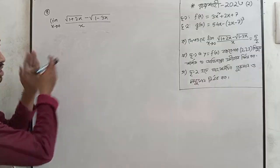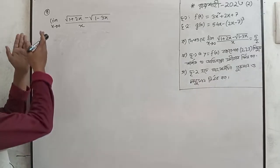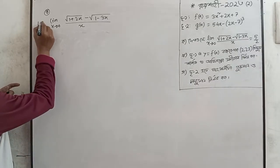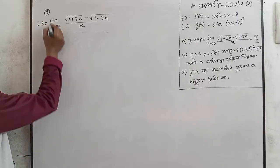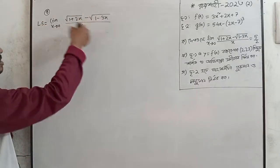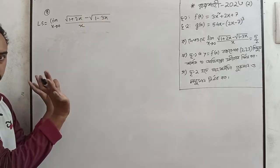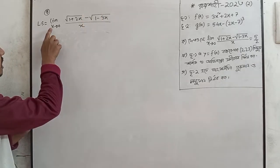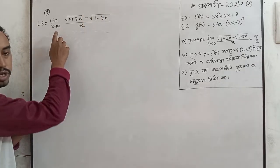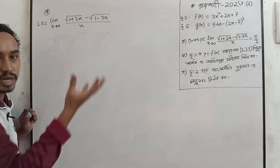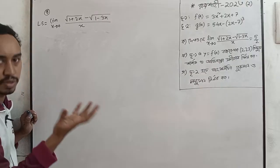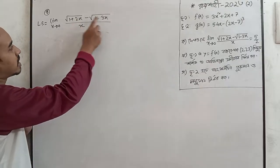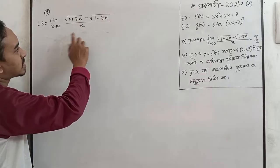We have to take a look at this step. When we take the left side, which is the limit x tends to 0, this method is called the 0 over 0 form. The number as x tends to 0 gives a 0 over 0 indeterminate form.